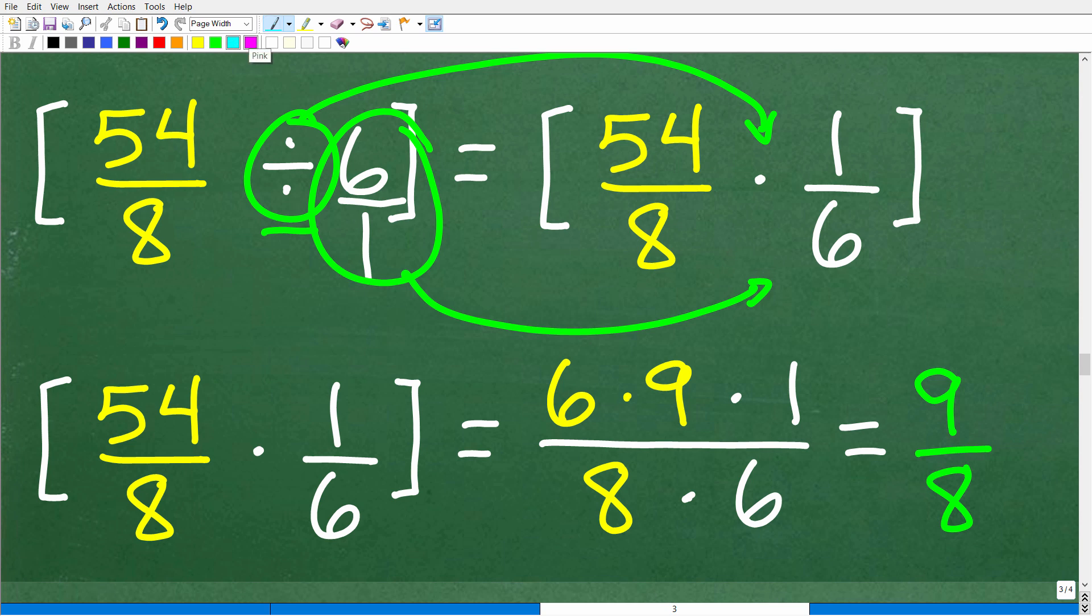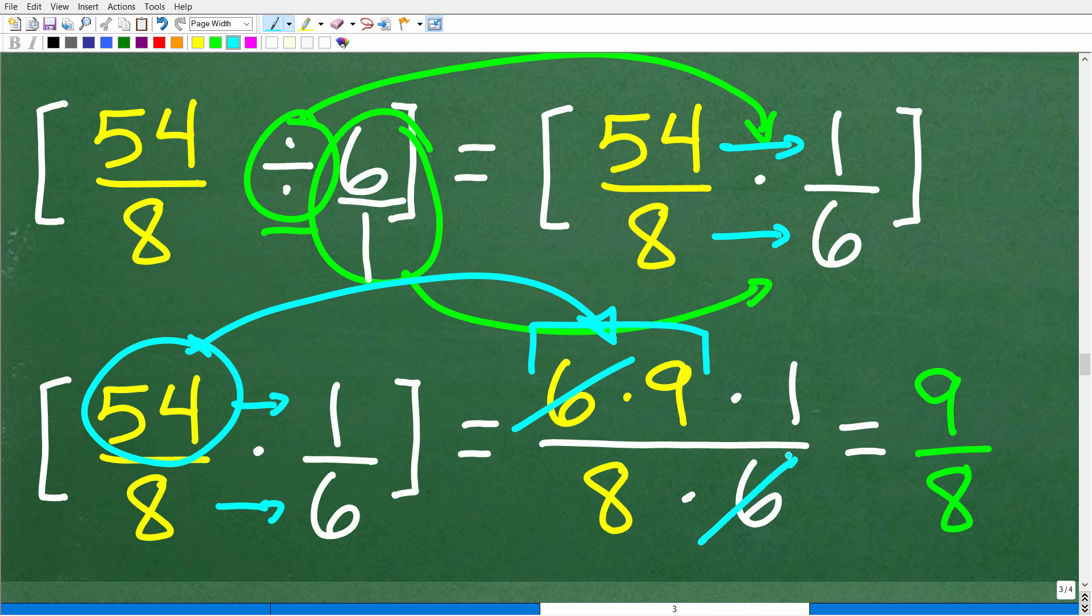Okay. So, we're almost done. So, we need to multiply 54 over 8 times 1 over 6. Now, instead of 54, we're going to factor 54 to make our life a little bit easier. So, 54 is the same thing as 6 times 9. So, really, the problem now is 6 times 9 times 1 over 8 times 6. Now, the reason why you want to factor here is it makes our life a lot easier when we want to simplify or reduce fractions. So, we can cross-cancel like factors. So, this 6 can cross-cancel with this 6. And we're left with 9 over 8, which, of course, is our final answer.